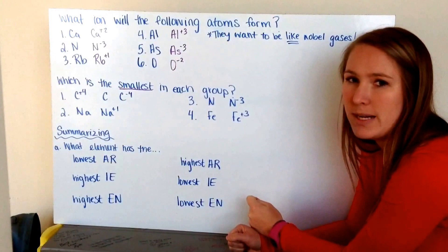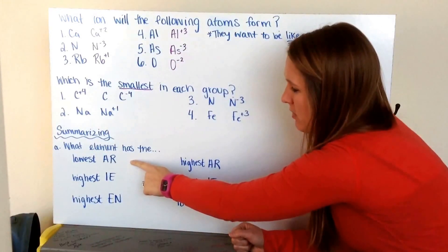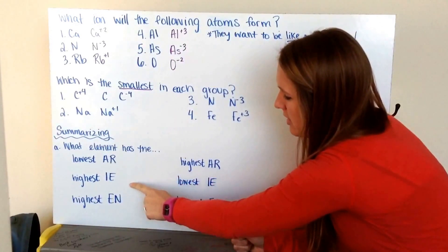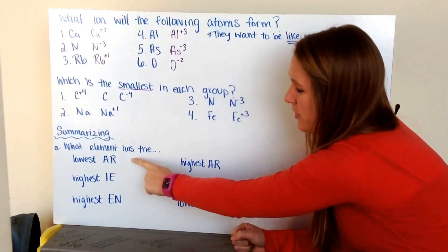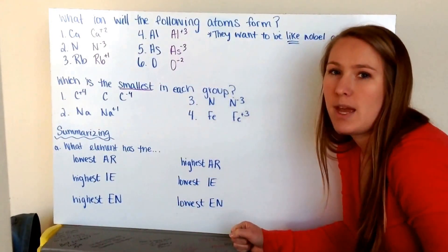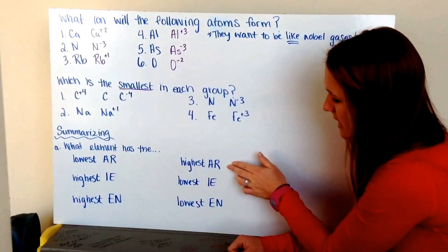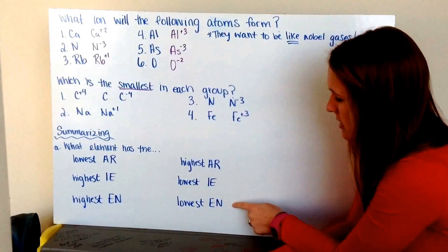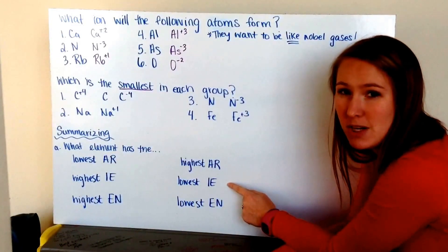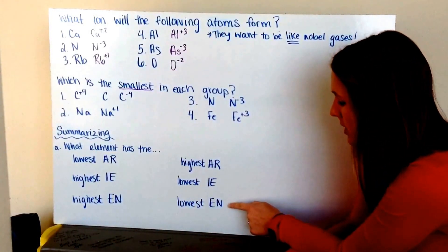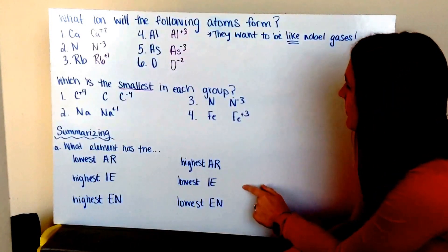Summarizing all of my different trends: which element on the periodic table has the lowest atomic radius, the highest ionization energy, and the highest electronegativity? Hopefully you selected fluorine, as it is in the uppermost right-hand portion of the periodic table. For the highest atomic radius, lowest ionization energy, and lowest electronegativity — the one with the most energy levels, requiring the least energy to remove the outermost electron, and wanting one more electron the absolute least — you should have found francium.